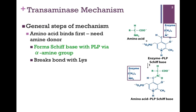Let's review the general steps of the mechanism. On the upper right, we have our PLP cofactor covalently linked to that side chain of lysine. The first substrate to bind is the amino acid. Remember, we're transferring that amine group from an amino acid to a keto acid, and so our amino acid donor must be the first substrate to bind.